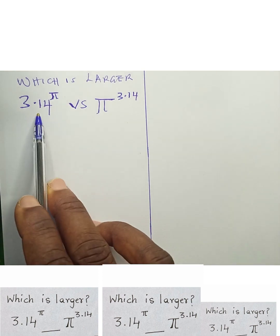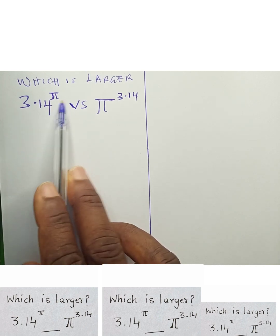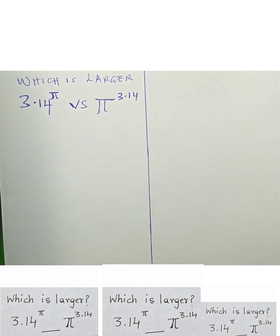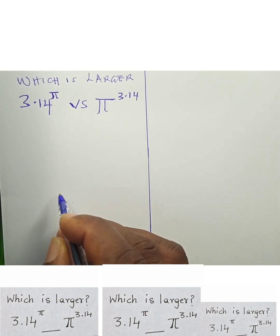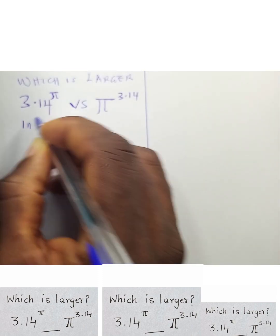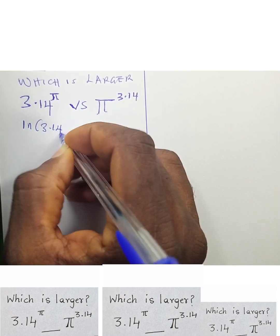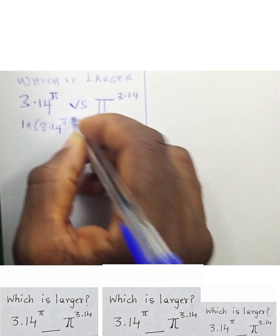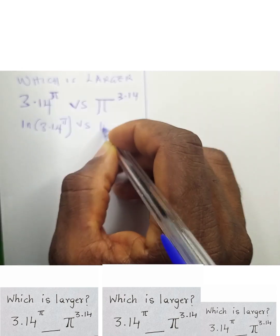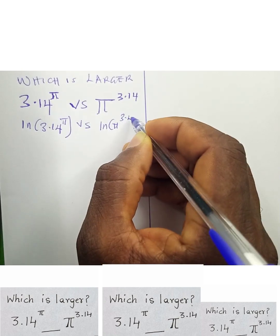Remember, one is a decimal number raised to the power of an irrational number, and the other is an irrational number raised to the power of a decimal number. So what we are going to do is take the log of both sides. Taking the log of both sides, we have ln of 3.14 raised to the power of pi versus ln of pi raised to the power of 3.14.